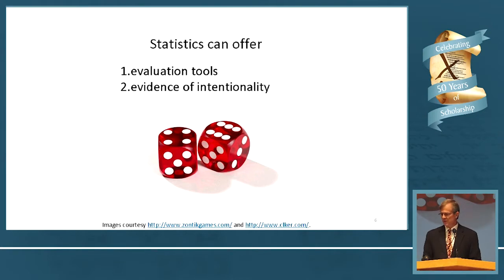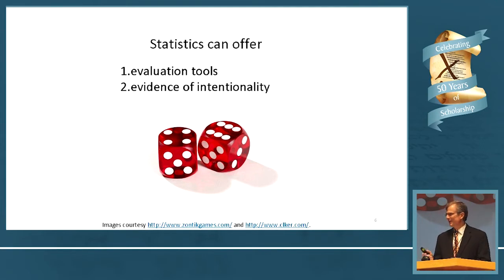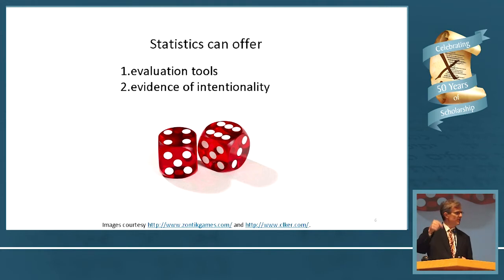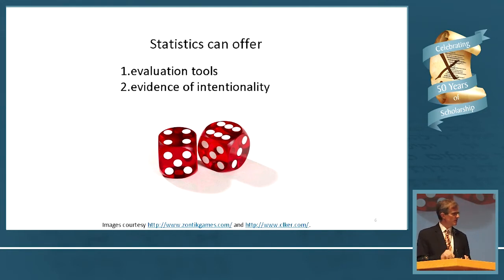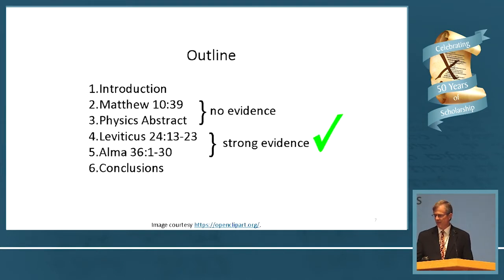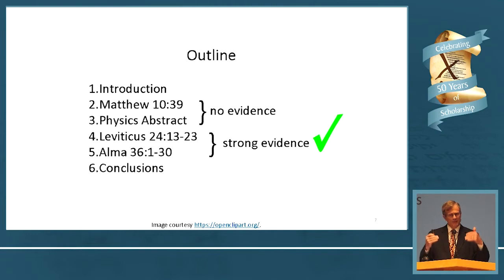We can offer evaluation tools, and in some cases we can offer evidence of intentionality. We cannot, however — and this is a correction, Neil — we have not proved that the Doctrine and Covenants' chiasmus were not intentional. We cannot prove that. All statistics can do is either offer evidence of intentionality or offer no evidence whatsoever. They cannot say that it was not intentional. So a chiasm that doesn't pass our criteria is not necessarily not a chiasm — it might still be a chiasm, but it just doesn't pass our statistical test. And in fact, there are very few chiasms that do.